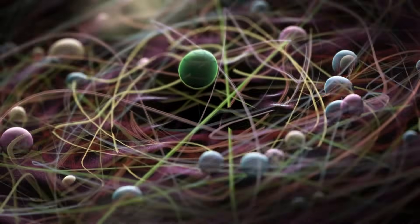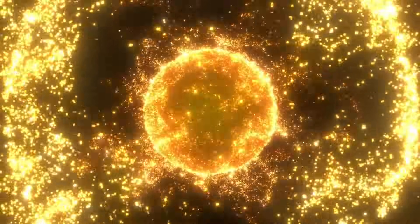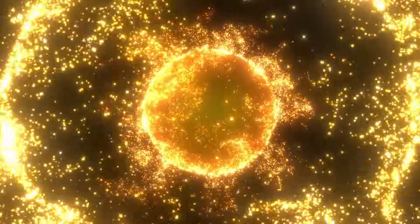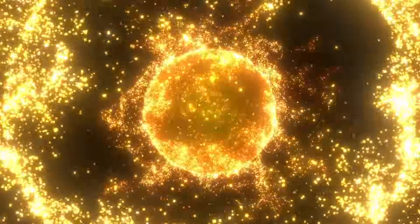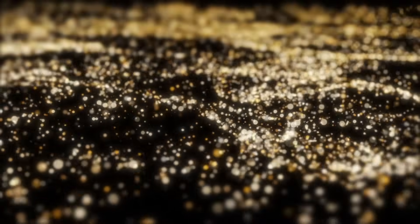In the very early universe, the sub-nuclear particles that later made up the protons and neutrons existed in a free state as a quark-gluon plasma. As the universe expanded and cooled, the quark-gluon plasma would undergo a phase transition and become confined into the protons and neutrons we know and love today.